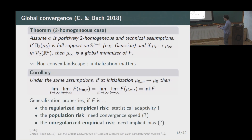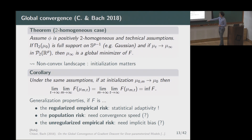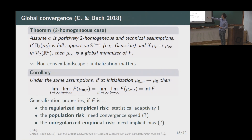For finite width two-layer neural networks, this corresponds to asymptotic results. If we take an initialization such that the empirical distribution converges to mu_0 satisfying this hypothesis, then when we take the time and the number of units going to plus infinity in any order, we converge to a minimum of the objective function. This means among all possible widths of two-layer networks, we will find the best objective function value.